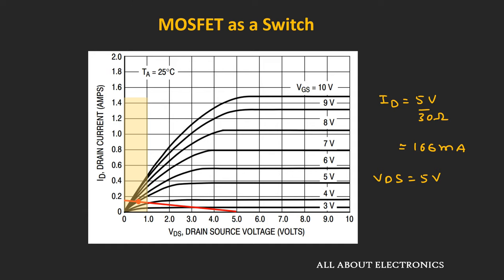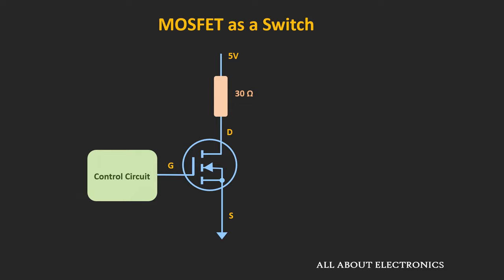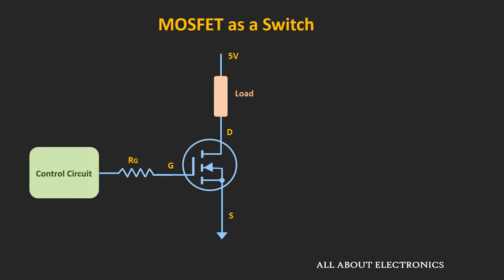So far in our discussion, we have directly applied the control voltage to the gate terminal. But actually, there should be a series resistor between the gate and the control input. The gate of the MOSFET offers a very high input resistance at low frequencies, meaning the gate terminal hardly draws any current from the supply. But to turn on the MOSFET, when we apply the input through the control circuit without this series resistor, the MOSFET can draw a lot of current during the transient, which can damage the control circuit if it cannot supply that much surge current.